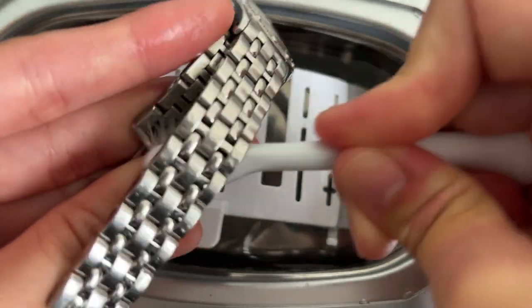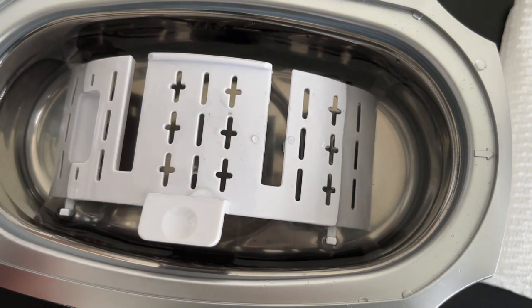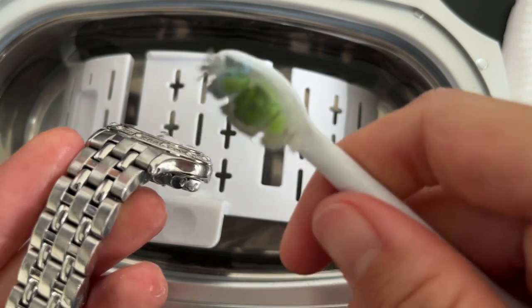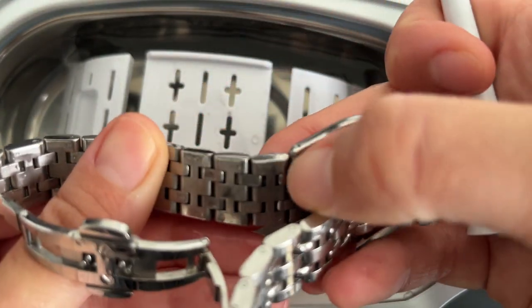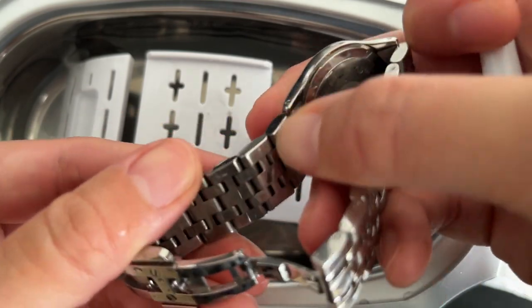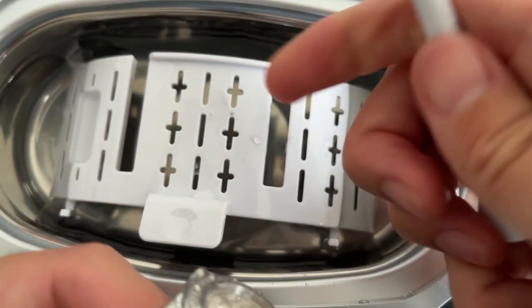So it doesn't seem like this water, the machine in the water, was able to do such a thorough job of cleaning my bracelet links. Now I wonder if it would be a different story if I had used one of the cleaning solutions, like it said. But I think for my watch, I don't think the little bubbles are strong enough to clean in between all of these.